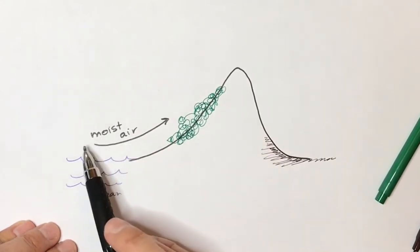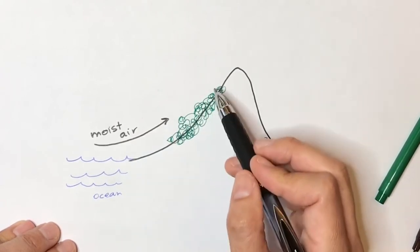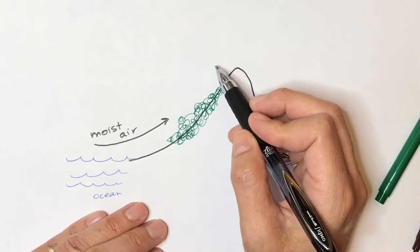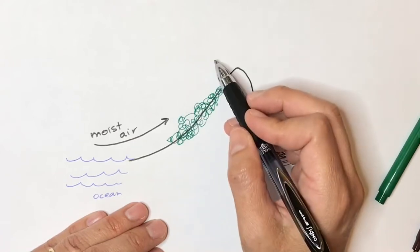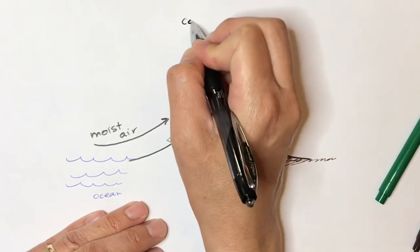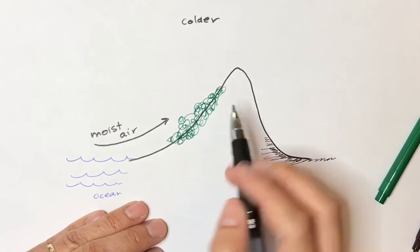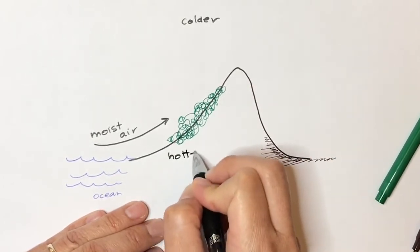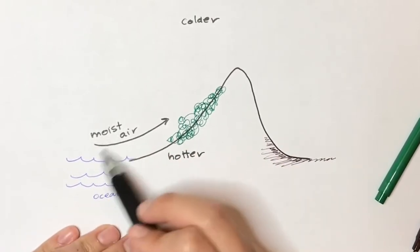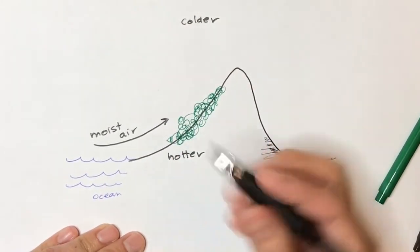As this moist air rises up it's going to get colder as it gets higher and higher up. The higher it gets and the colder it gets, the less water it can hold. Here it's going to be colder - this is away from the earth. The earth can hold a lot of heat in it, and down here it's going to be hotter. This is because all this land and ocean are holding a lot of heat, and it gets colder as we go higher up in the atmosphere.